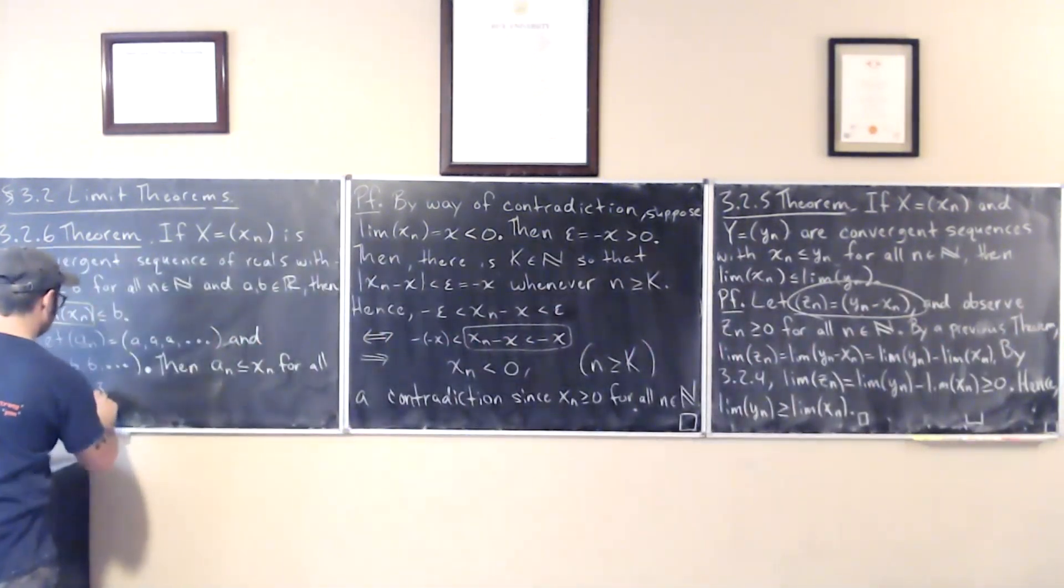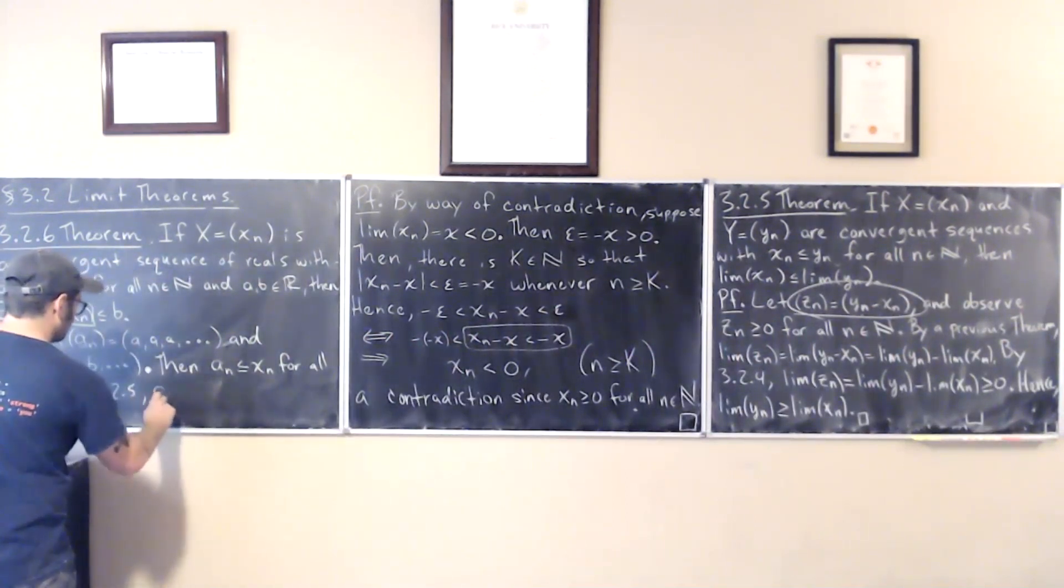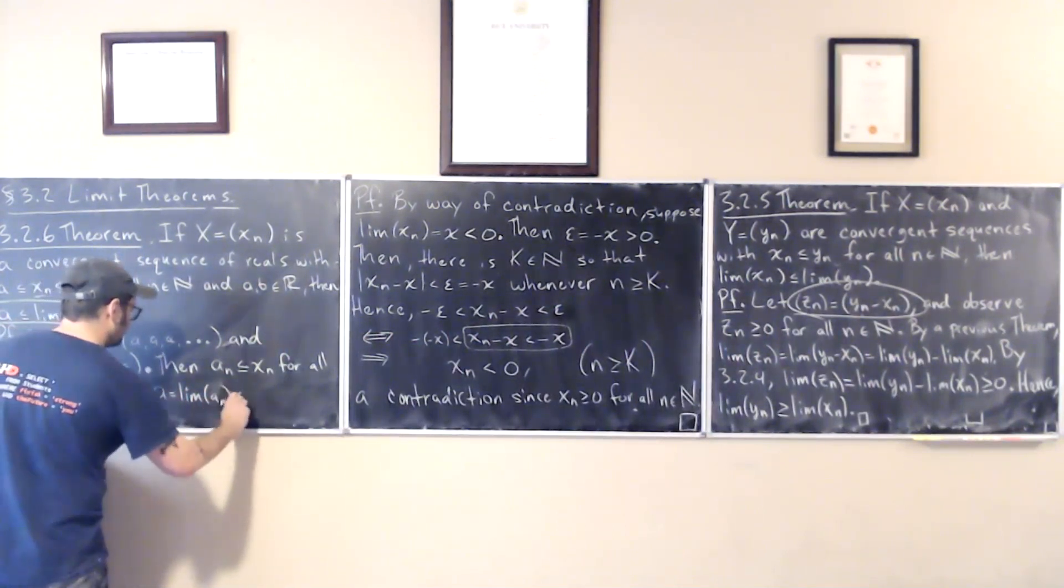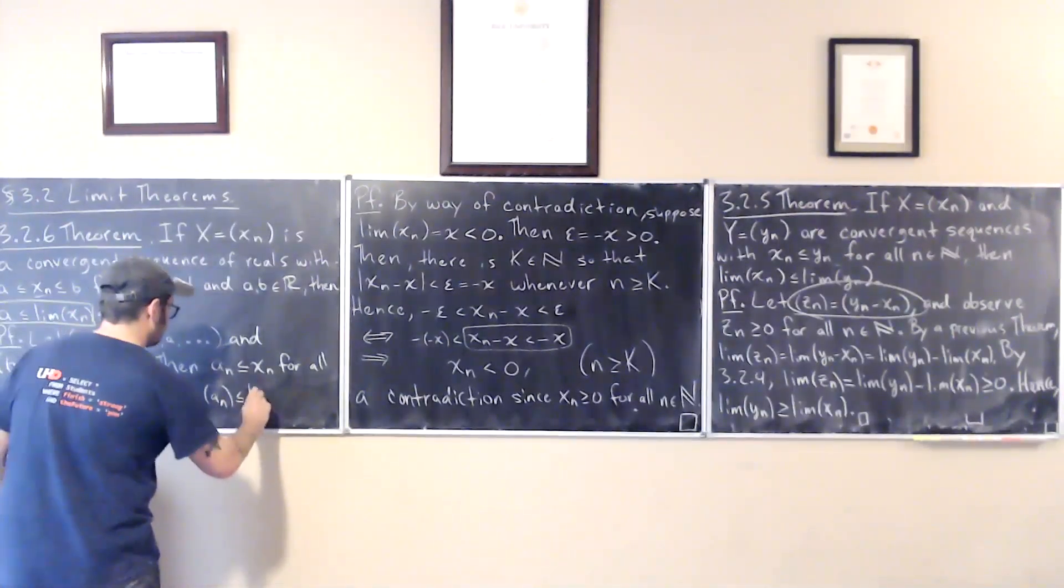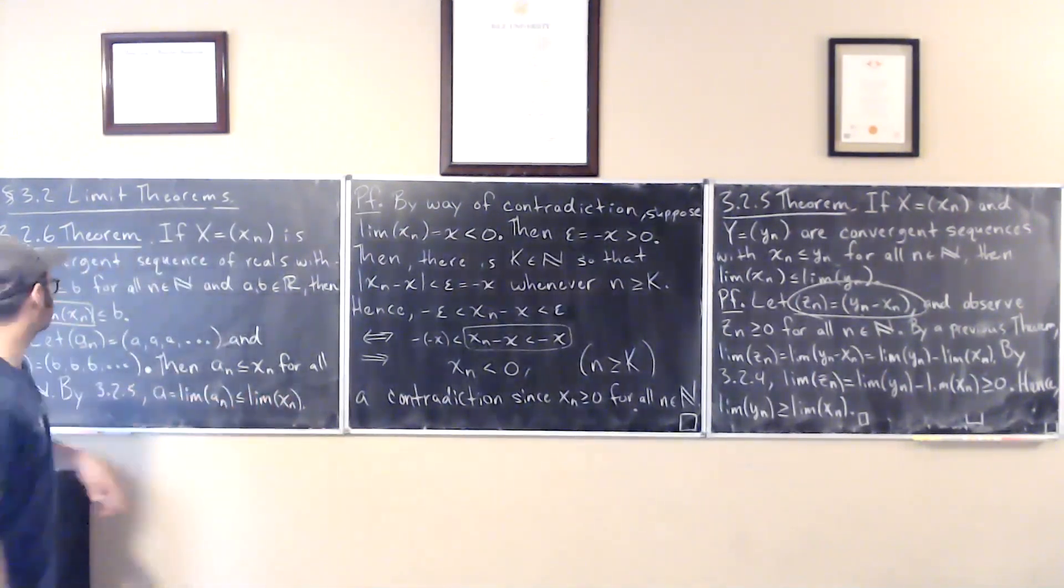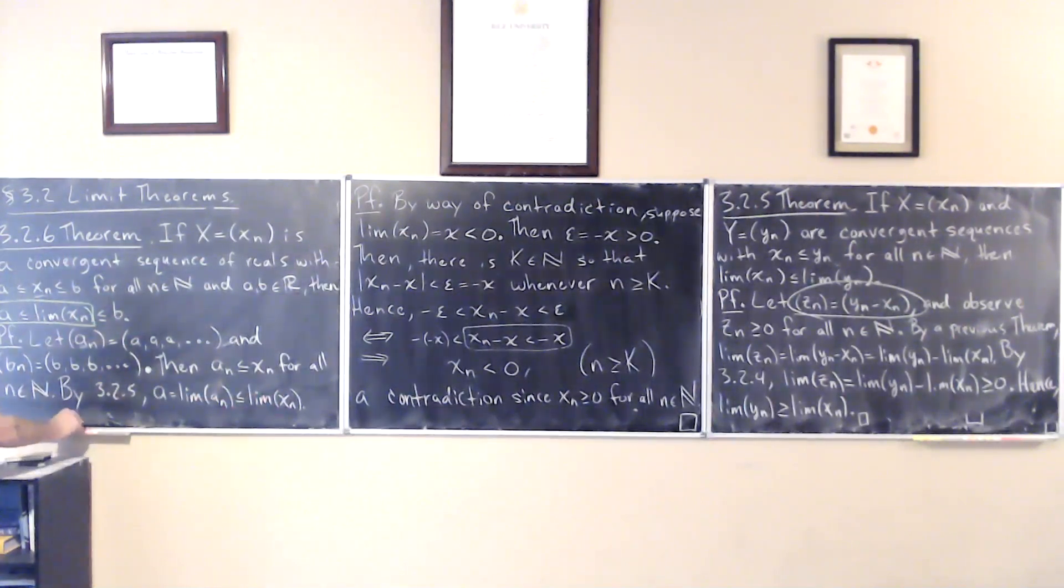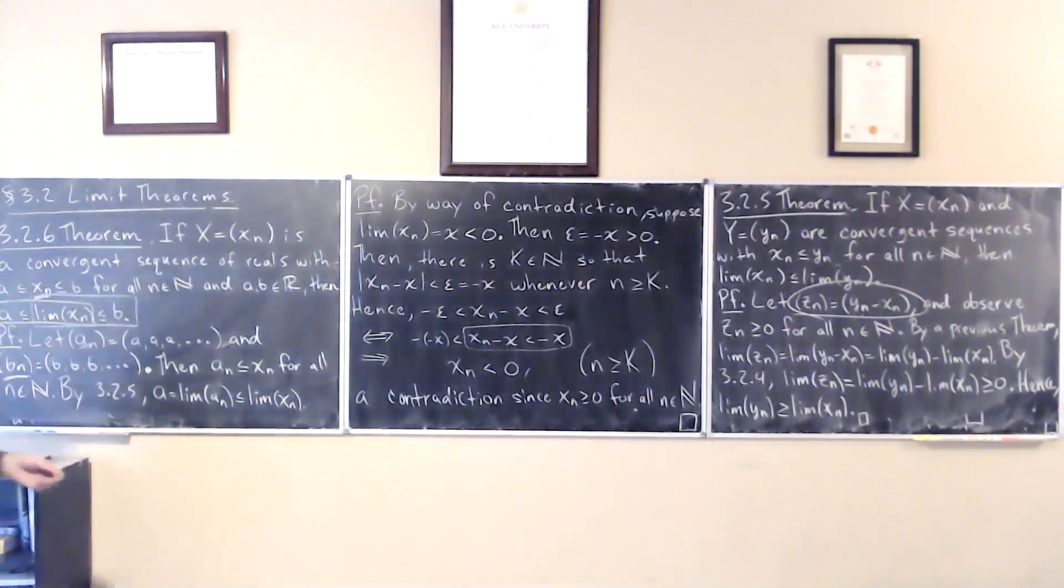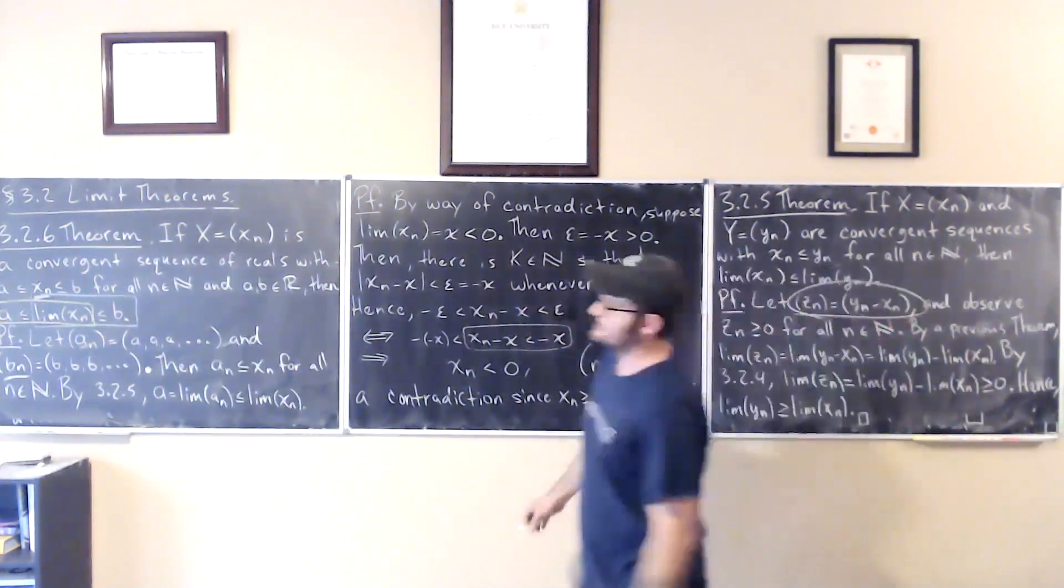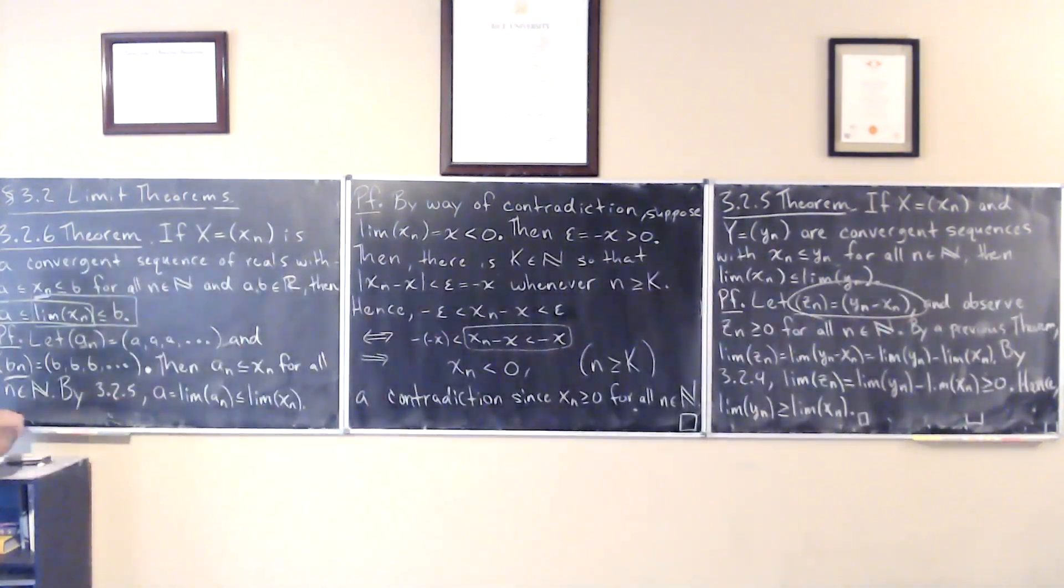So a is less than or equal to the limit of x_n. That establishes that. How do you think you would establish that the limit is at most b? It's the same thing. Just apply this theorem again.